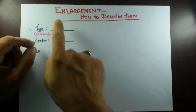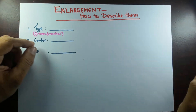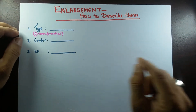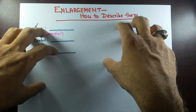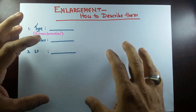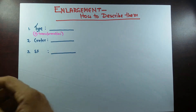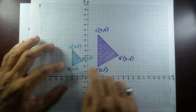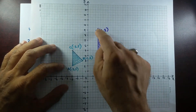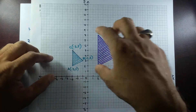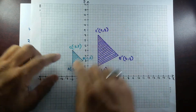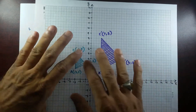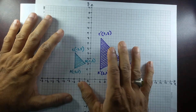Good morning students. Today I'll explain enlargement and how to describe them. In the last two transformations — rotation and reflection — the object and image are congruent; they don't change their sizes. But in the case of enlargement, looking at these two triangles, triangle ABC and triangle A'B'C', you can clearly see that A'B'C' is way bigger. They are not congruent — they are similar.